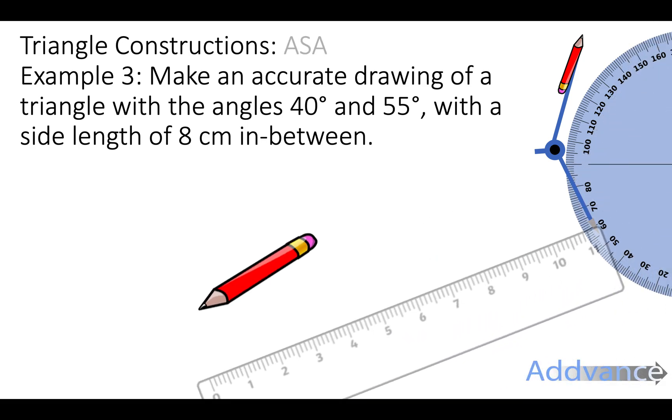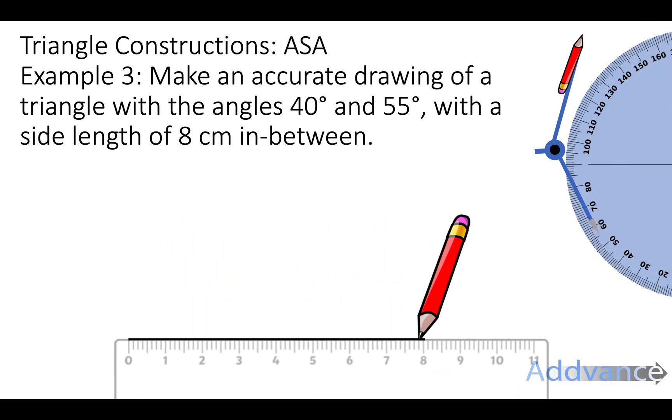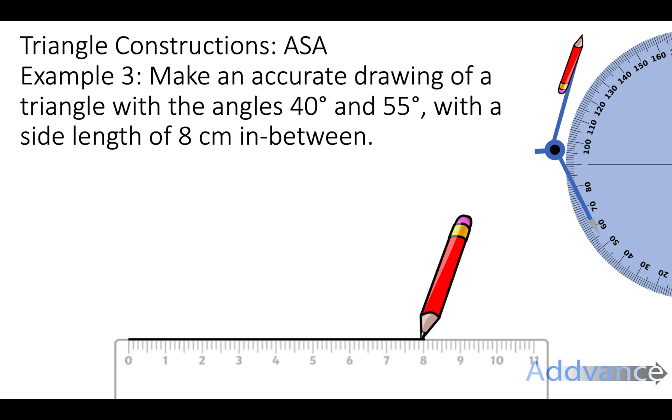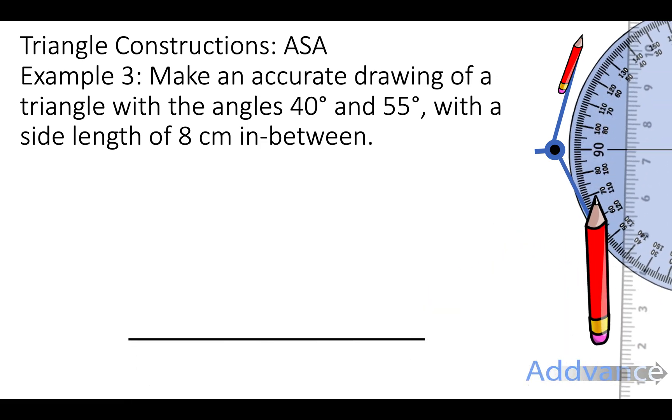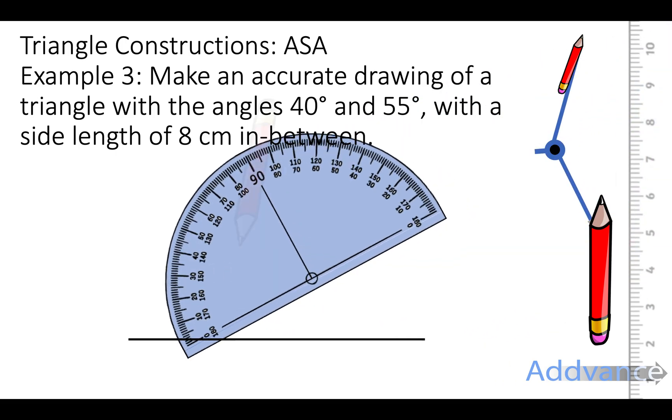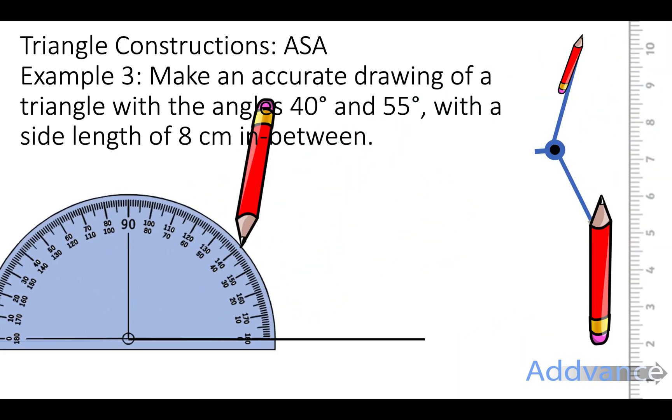So let's start again by drawing the sides which is 8cm long. We then take the protractor and we're going to do a 40 degree angle and we place the bullseye of the protractor over the tip of the line and then draw a little dash at 40 degrees.